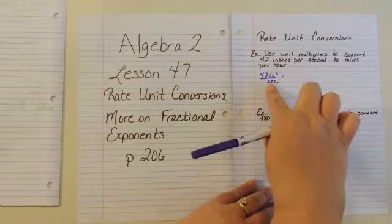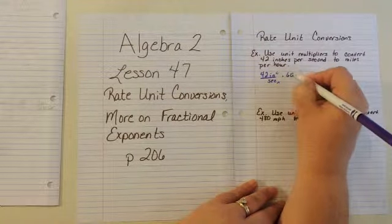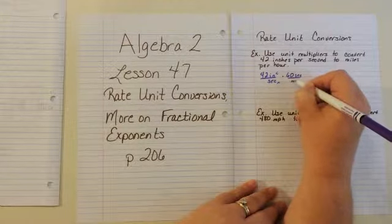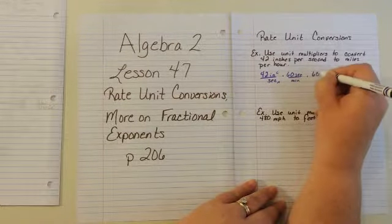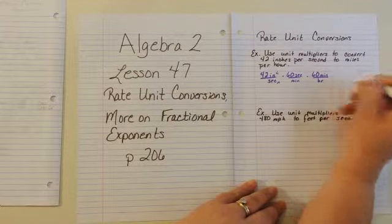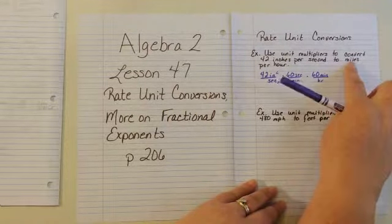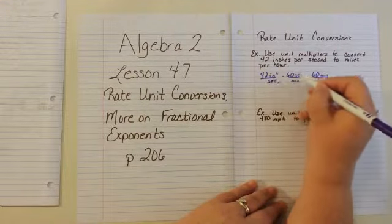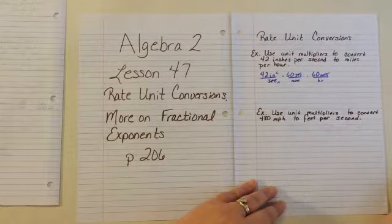We want to cancel out the seconds. There are 60 seconds in a minute, and there are 60 minutes in one hour. Now we have hours on the bottom, and we want them on the bottom — we want miles per hour. The seconds cancel and the minutes cancel.